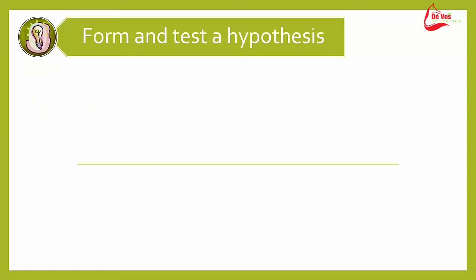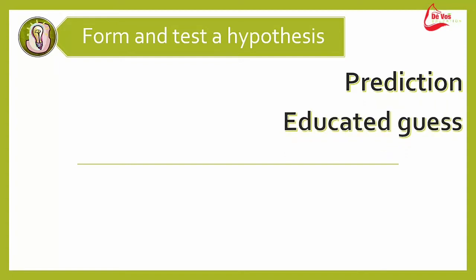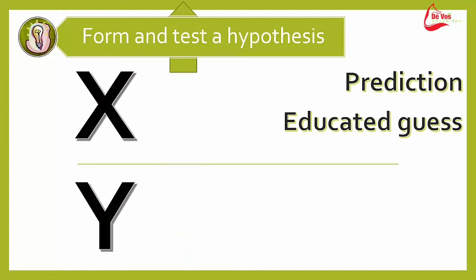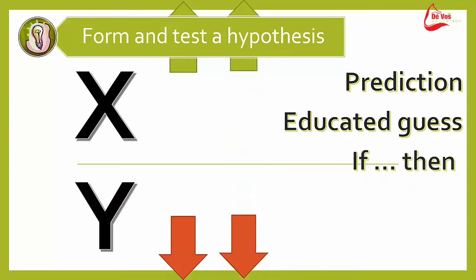Here we form a hypothesis that can be tested. It should be a prediction written in the future tense. It is an educated guess of what you think will happen. For example, if X is increasing then Y could be decreasing, or if X were decreasing then Y could be increasing. It's usually written in the format of if-then and should always include the cause and the effect.